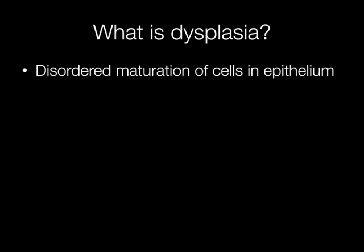Dysplasia has two main meanings. The first definition is the one that preoccupies most cellular pathologists, and this is disordered maturation of cells in epithelium. The alternative definition will be briefly covered later.